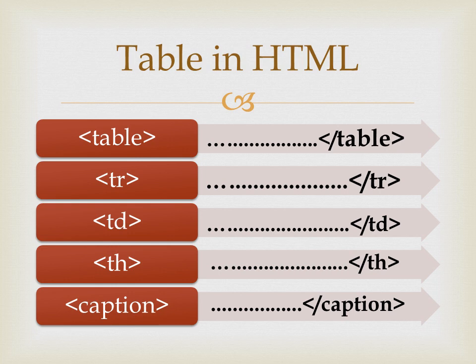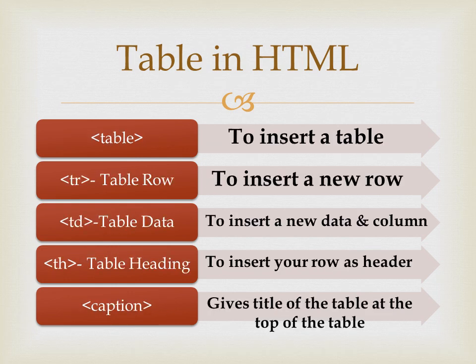What does each tag do? The table tag is used to insert a table. TR stands for table row and is used to insert a new row into your table. TD stands for table data and it inserts new data and a new column.